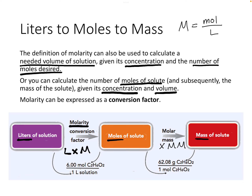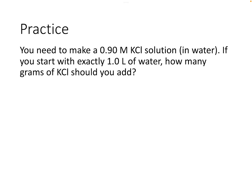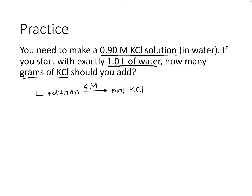Let's look at an example. We need to make a 0.9 molar potassium chloride solution starting with exactly one liter of water. How many grams of KCl should we add? We start with the liters of solution, convert to moles of KCl by multiplying by the desired molarity, then convert moles to grams using the molar mass.